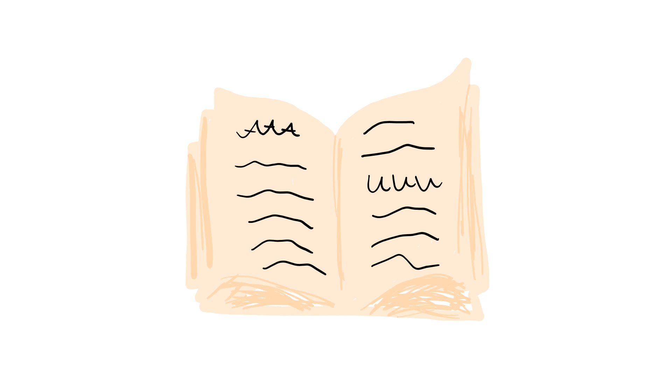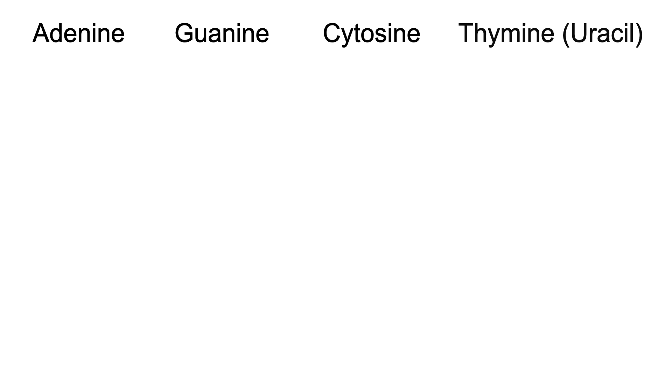I like to think of the genetic code as a language, a structured method of communication between protein synthesis machinery. Each nucleotide base—adenine, guanine, cytosine and thymine, or uracil—are like letters: A, G, C, T or U.